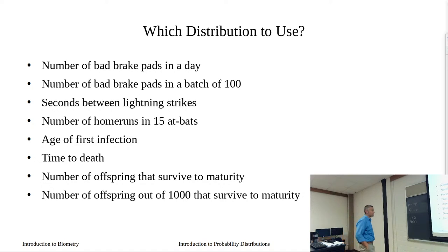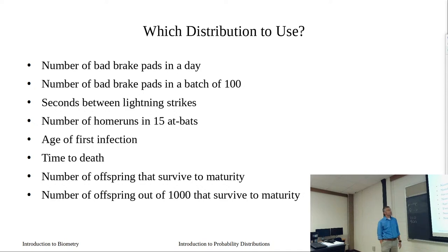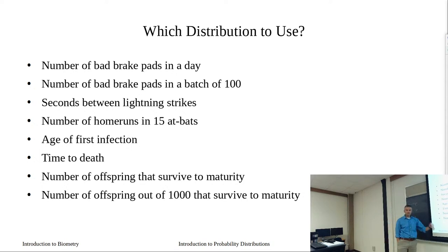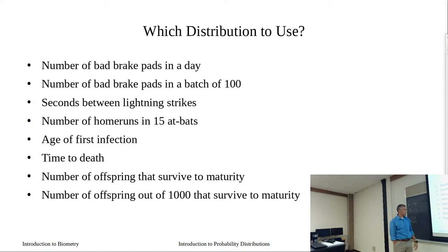Let's take a few minutes to answer these. Number one: number of bad brake pads that come off an assembly line in a day. Number two: number of bad brake pads in a batch of 100. Number three: seconds between lightning strikes. Number four: number of home runs in 15 at-bats. Number five: age of first infection — say, age of our first flu infection. Next: time to death, where we expose an organism to pollution and record when they die. Number of offspring that survive to maturity. And number of offspring out of 1,000 that survive to maturity. Choices: binomial or Poisson.